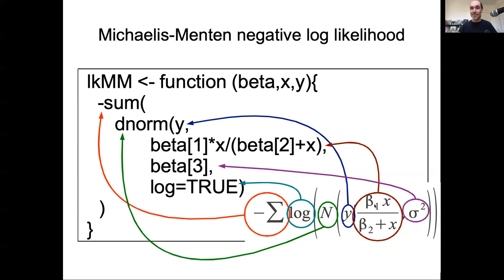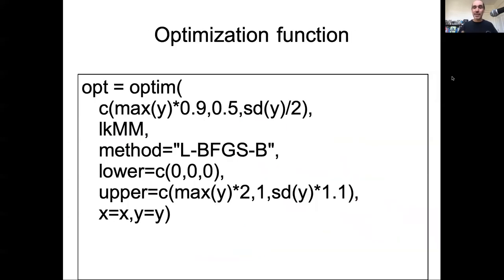So write down the likelihood, take the logs. Next, we need to find the value of the parameters that minimizes this negative log likelihood, and we're going to do that again using optim. So this is a slightly more complicated version of a call to optim.